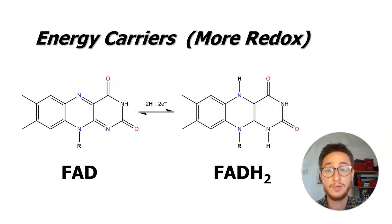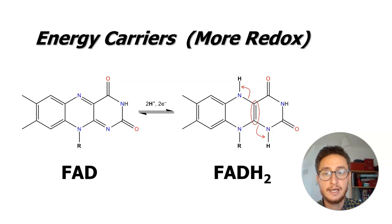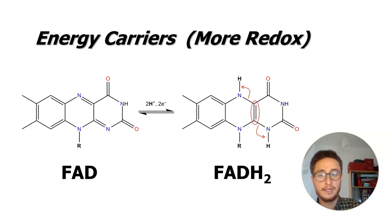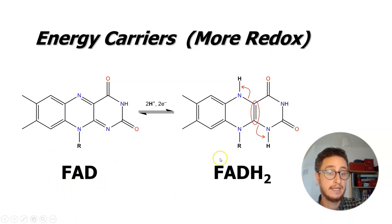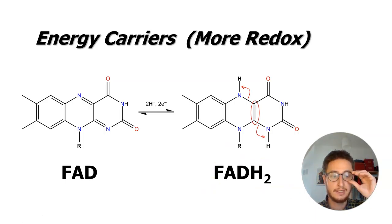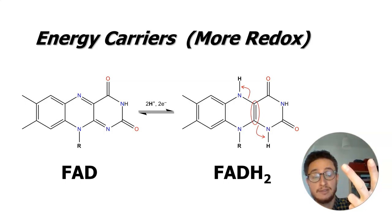There's yet another molecule with two forms — an oxidized and a reduced form — called another high-energy carrier. FAD is the oxidized form, and FADH₂ is its reduced form, taking on two extra electrons and two protons. We can carry energy throughout cells in the form of ATP, NADH, and FADH₂ — all carrying extra high-energy electrons we can use for all kinds of reactions.